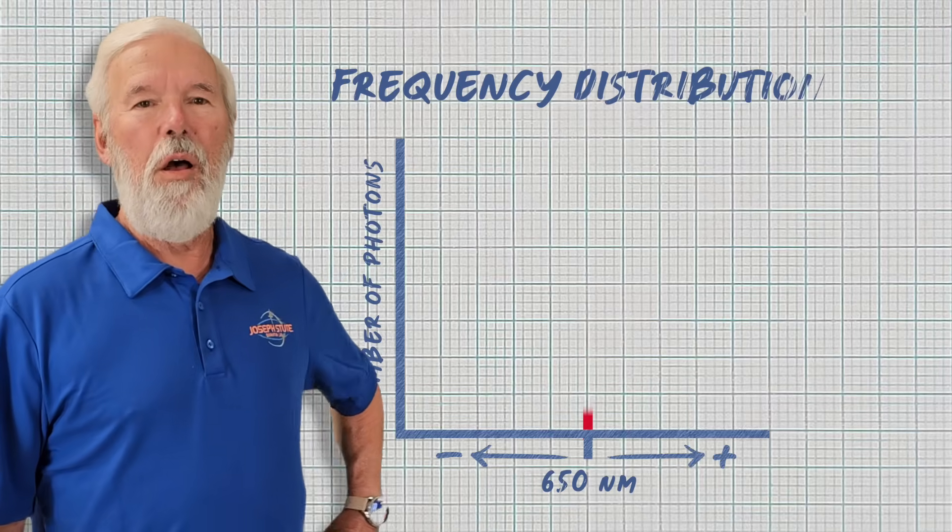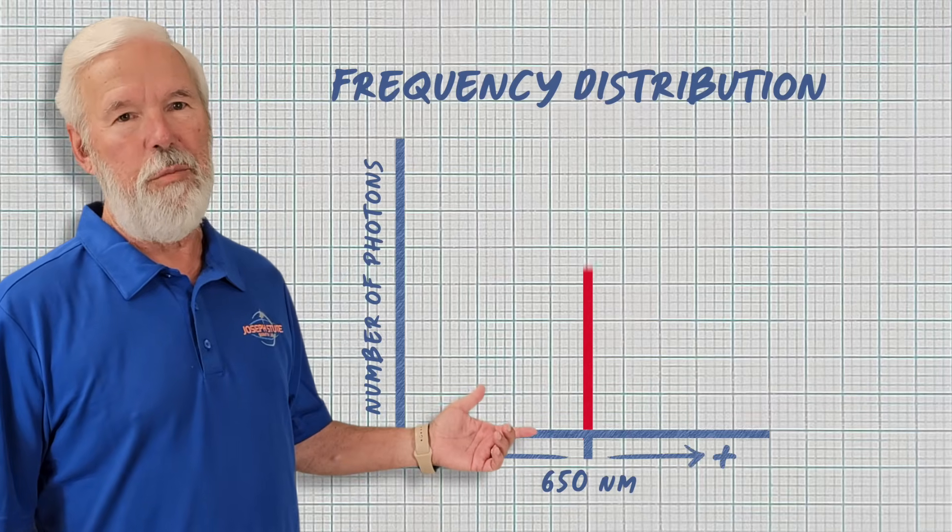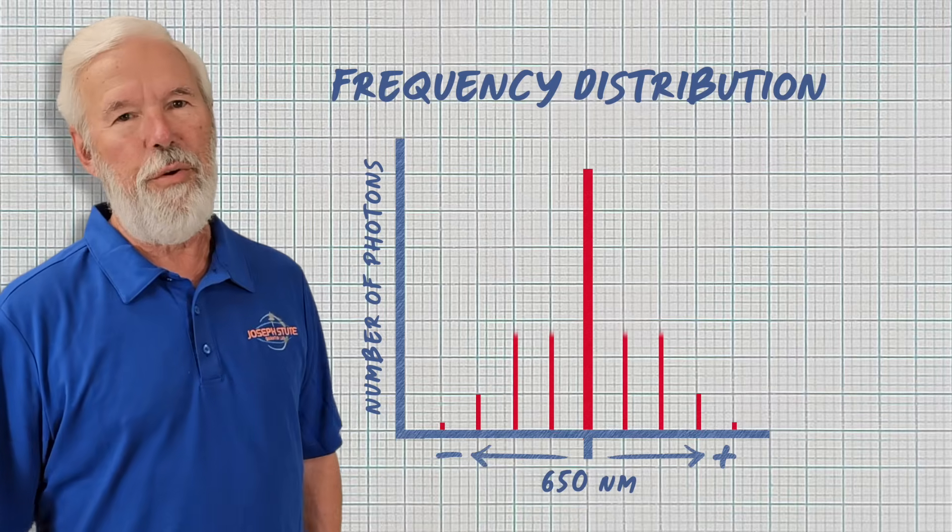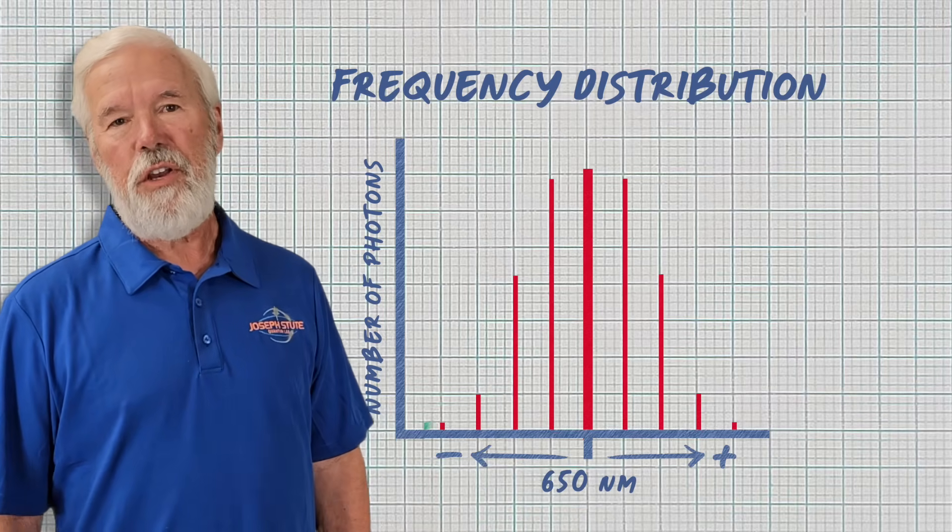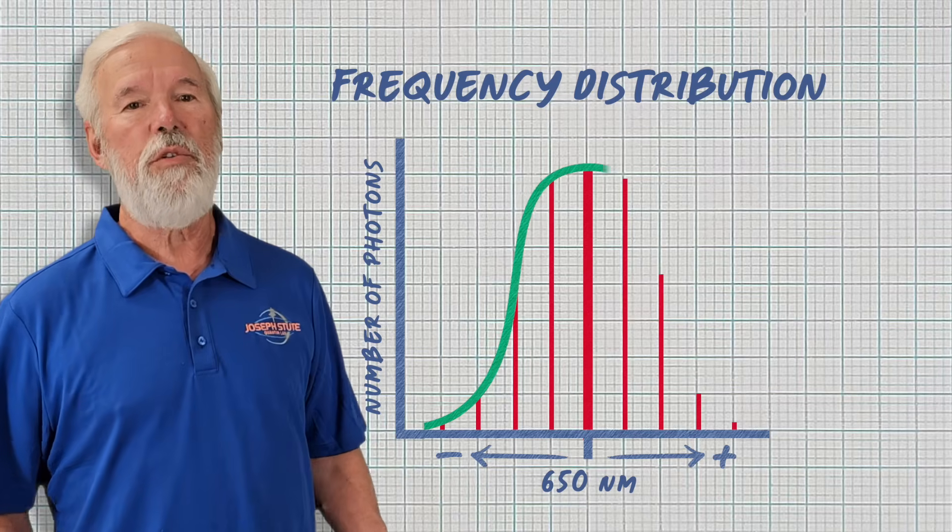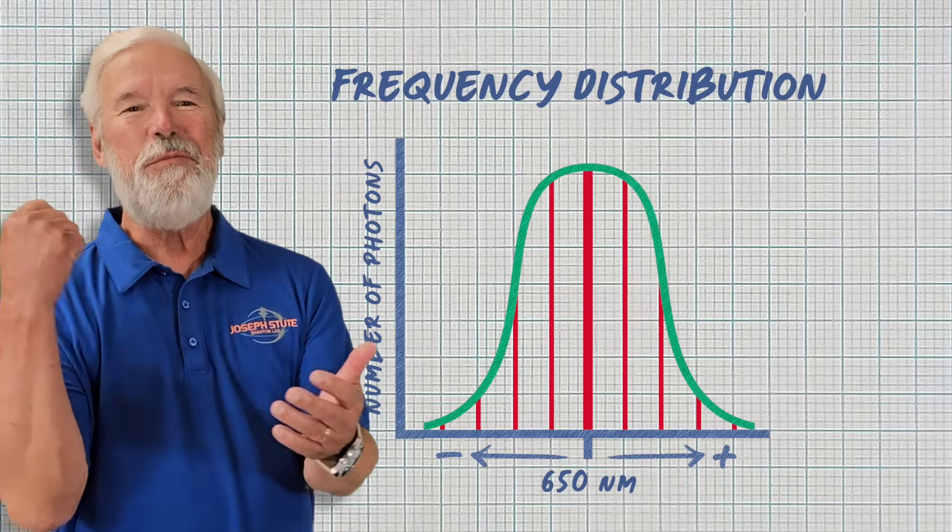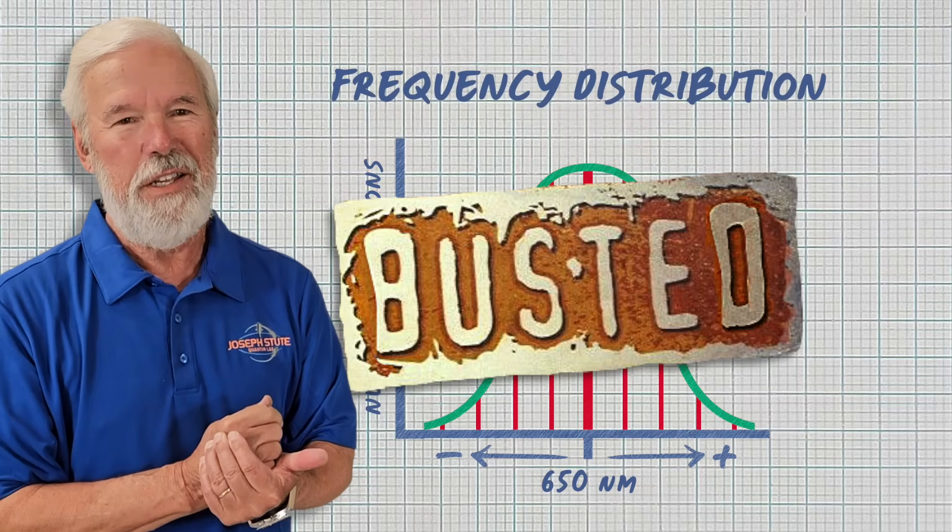Laser light is described as monochromatic. To be monochromatic, all the photons from the laser must be the same frequency. A laser diode that perfect has yet to be made. The imperfections cause the laser to produce photons with different frequencies. This myth is also busted.